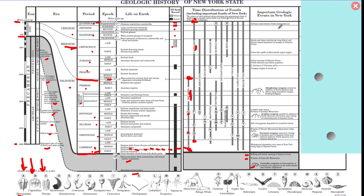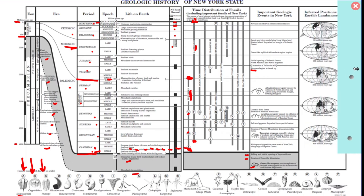The last section covers geological events — things like building mountains, making oceans, and breaking apart Pangaea. Read every word on this chart so you know where events exist, like the Acadian Orogeny. There's also a section tracking where North America has moved over time — we're moving to the northwest.